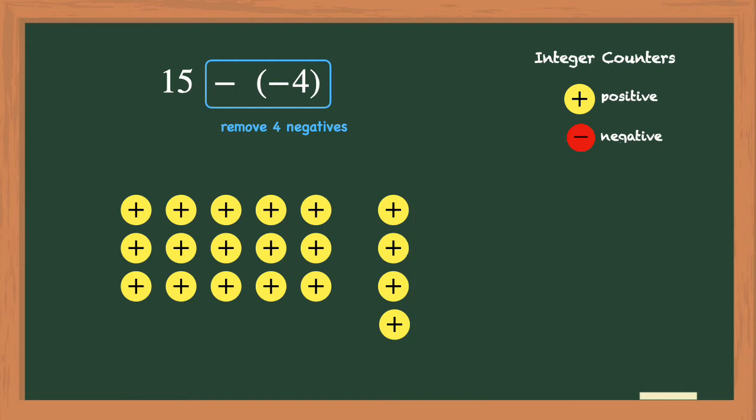And all we need to do now is count the number of counters left on the screen. There are 19 positive counters, so the difference or the answer to this subtraction problem is positive 19.